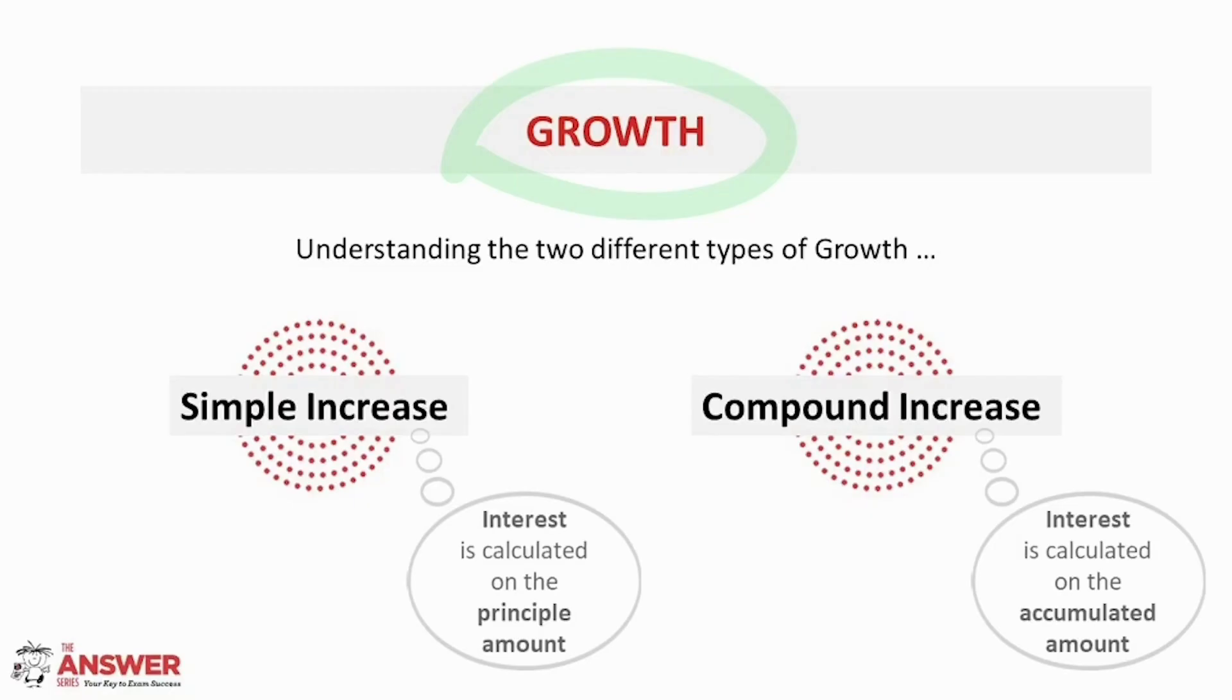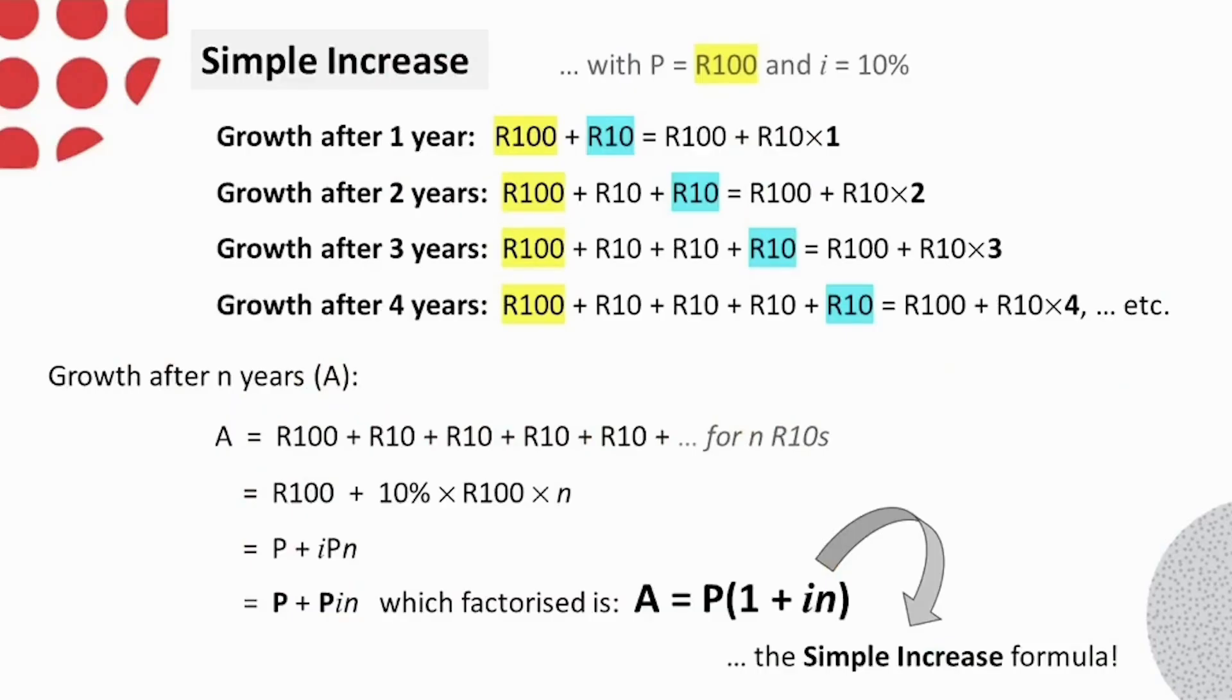The most significant difference between them is how the interest is calculated. For simple increase, interest is calculated on the principal amount and for compound increase, it is calculated on the accumulated amount. To understand these further and to see the impact they have on growth over several time periods, we will illustrate each using the same initial information. These next two slides consider the growth for N years for both simple and compound increase. In each case of growth, we start the illustration using an original amount of 100 rand and an interest rate of 10%. Remember to pause at any point along the way where you may feel the need to re-look at something.